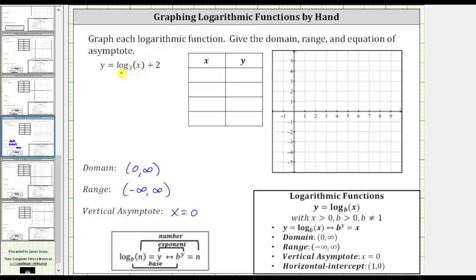We first isolate log base three of x by subtracting two on both sides, which gives us y minus two equals log base three of x. Now we write the equivalent exponential equation using the definition shown below, where for this log equation, the equivalent exponential equation is three raised to the power of y minus two must equal x.